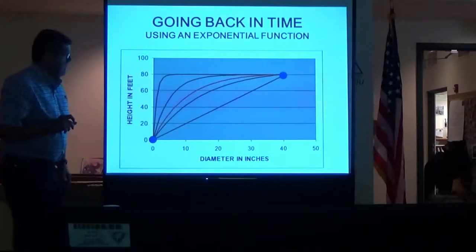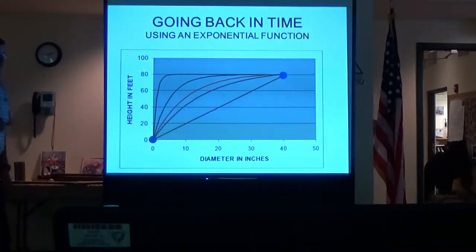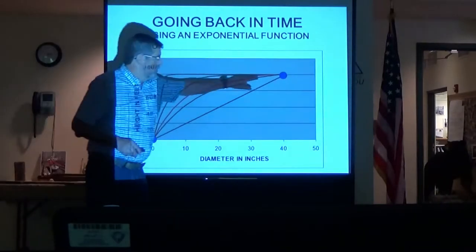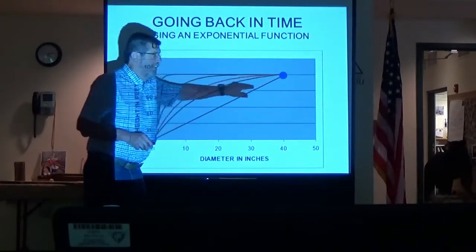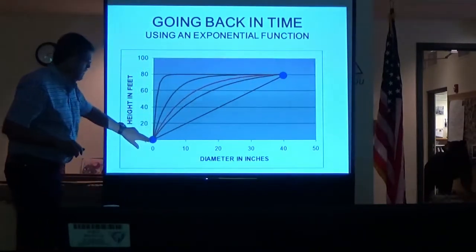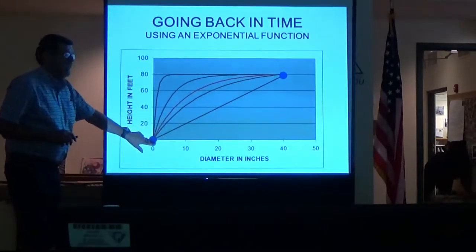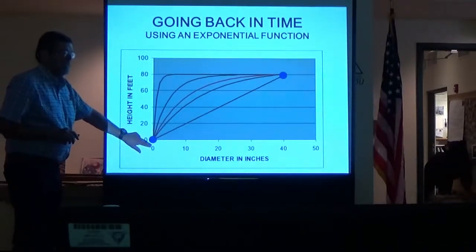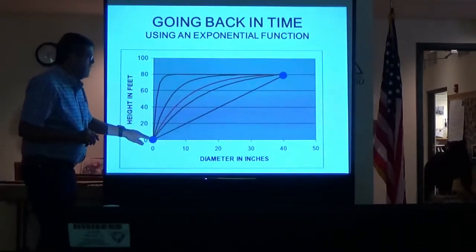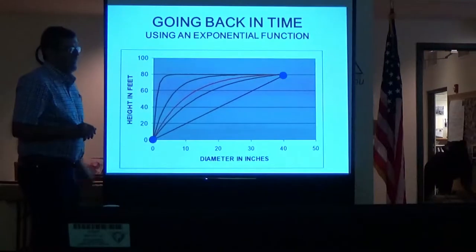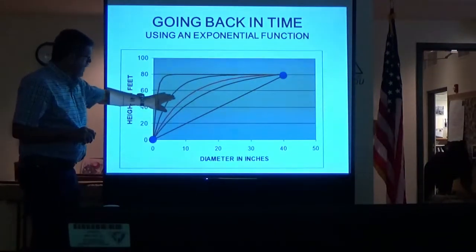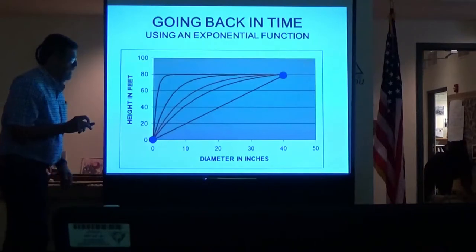Our problem is we only have two data points. We know the diameter of the tree today and its height, and we know the diameter of the tree when it had no height and it had no diameter. So the question is how do we get from point A to point B? There are all these possible curves, and we'll find out the red one is the one that fits.